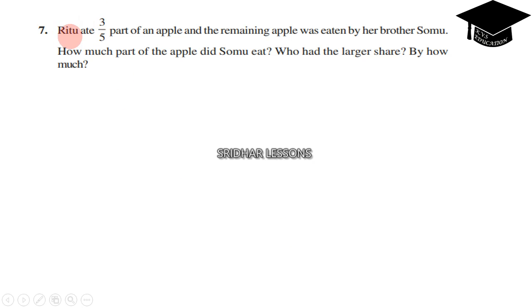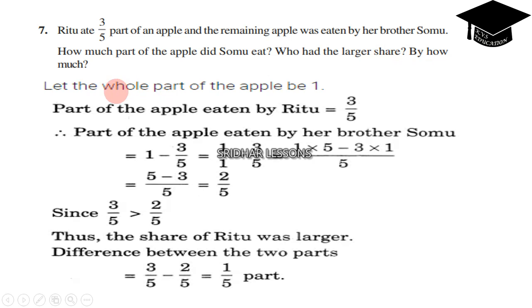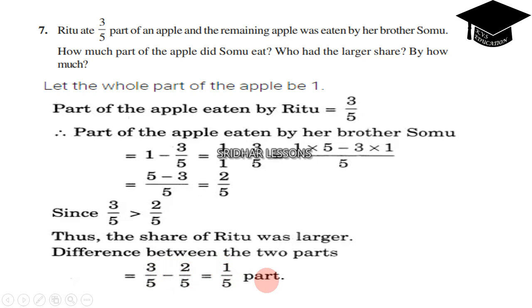Question 7: Ritu ate 3 by 5 part of an apple and the remaining was eaten by her brother Somu. How much did Somu eat, and who had the larger share? Let the whole apple be 1. Ritu ate 3 by 5, so Somu ate 1 minus 3 by 5. LCM is 5: 5 minus 3 by 5 equals 2 by 5. Since 3 by 5 is greater than 2 by 5, Ritu had the larger share. The difference is 3 by 5 minus 2 by 5, which is 1 by 5 part.